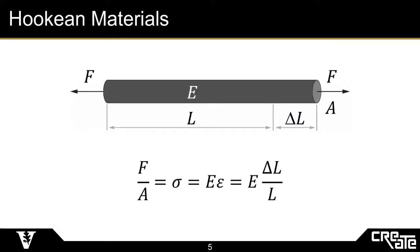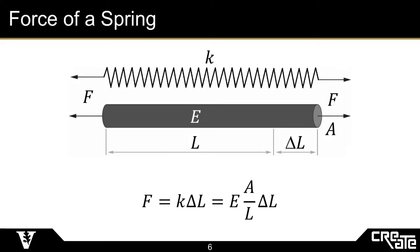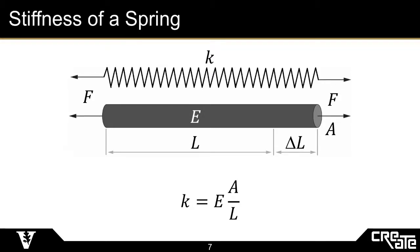First, we can start by examining the concept of stiffness. Consider a cylindrical rod of a Hookean material with initial length L, cross-sectional area A, and Young's modulus E undergoing axial loading. With Hooke's Law, we can describe a linear relationship between stress and strain, or force and deformation. From here, if we introduce an ideal linear spring of stiffness K for comparison, we can see that the stiffness becomes a function of some material property E and geometric properties A and L.